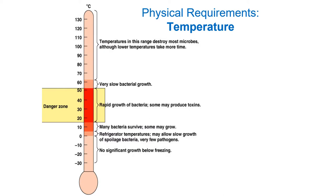Let's start by looking at temperature. Temperature is one of the easiest things to manipulate if you want to control the rate of bacteria growth — it's the reason you have a refrigerator and freezer in your house. At higher temperatures, chemical reactions occur more quickly because molecules have more kinetic energy and bump into each other more rapidly.